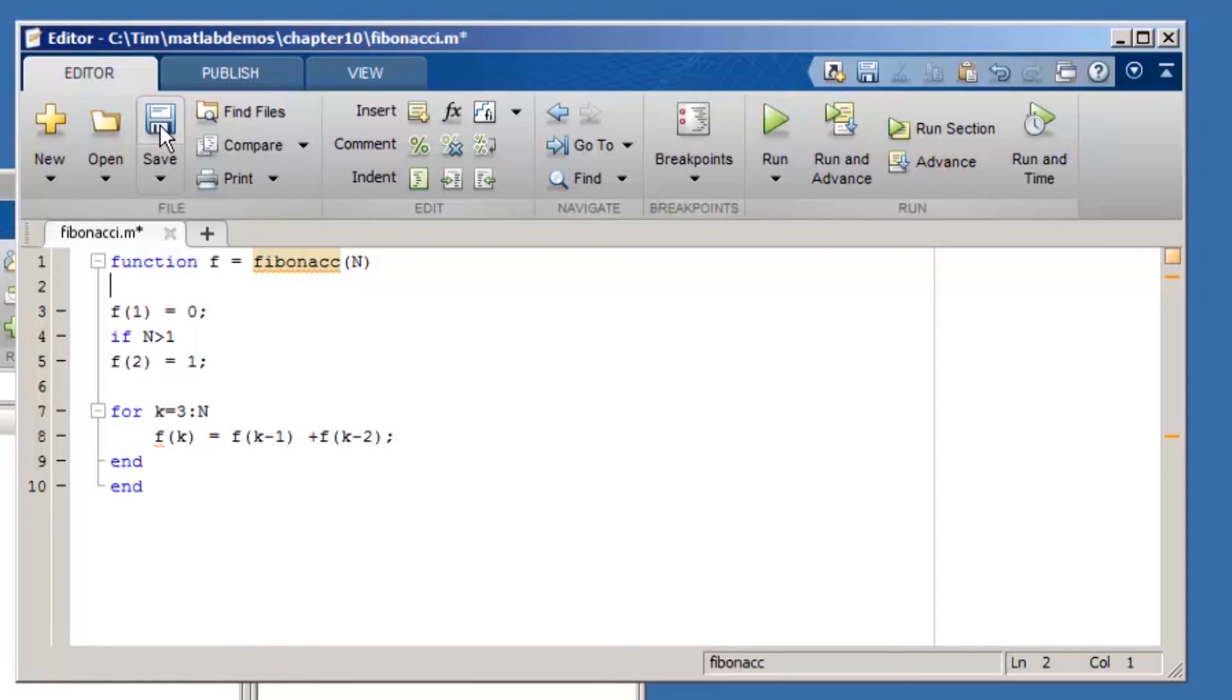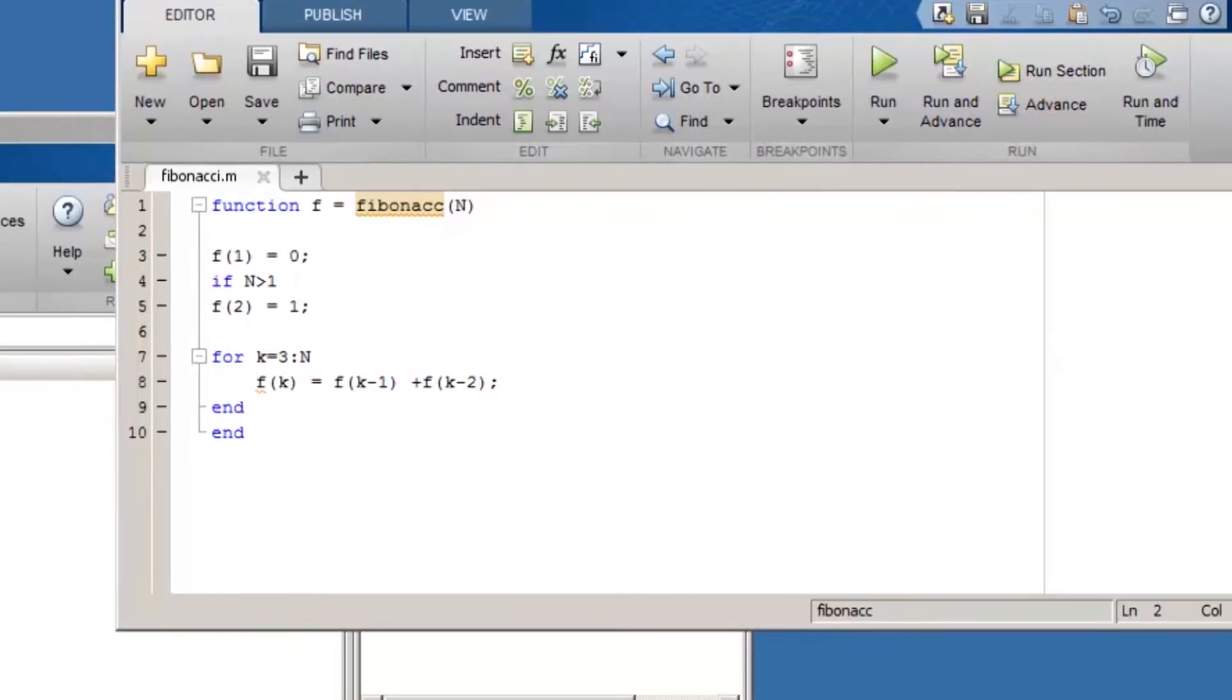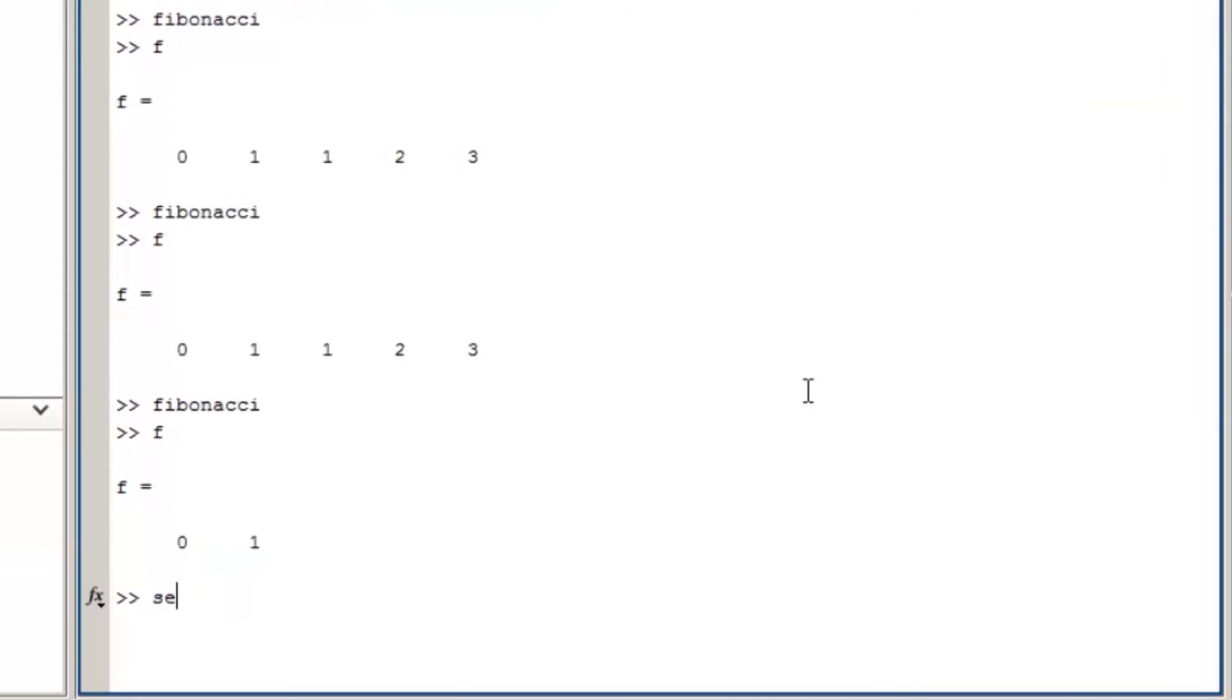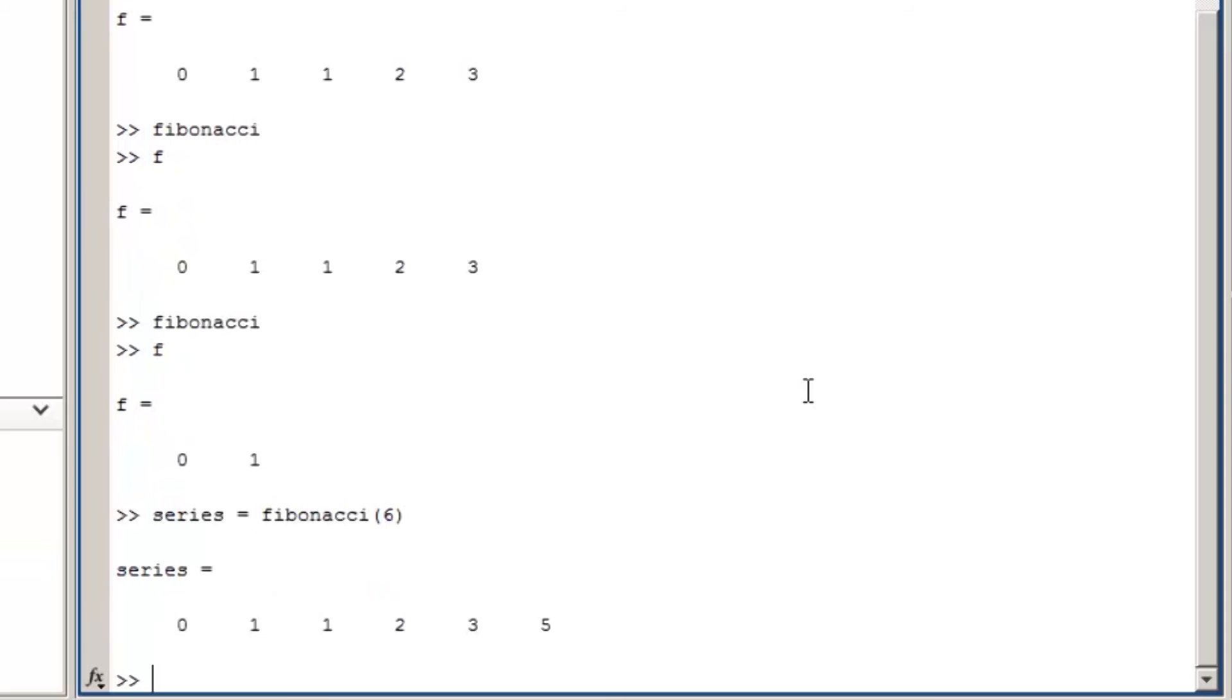Now I'll save my function and calculate six values of the series by typing series equals Fibonacci of 6. That looks good. I'll also check that it still works for n equals 1.